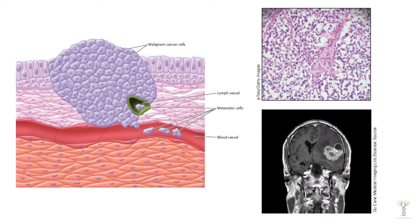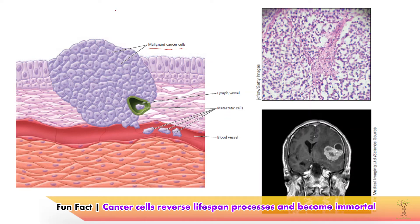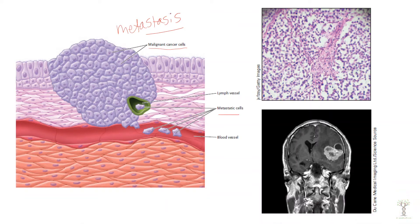In this slide we can see a tumor that has formed in the tissue. These are malignant cancer cells, which means they can spread. When cancer cells spread, that is called metastasis, or metastatic cells. Metastases is plural, and the two main ways these cells spread is through the lymphatic vessels or through blood vessels. Cancer cells can produce digestive enzymes that break down the extracellular matrix, which allows them to migrate.